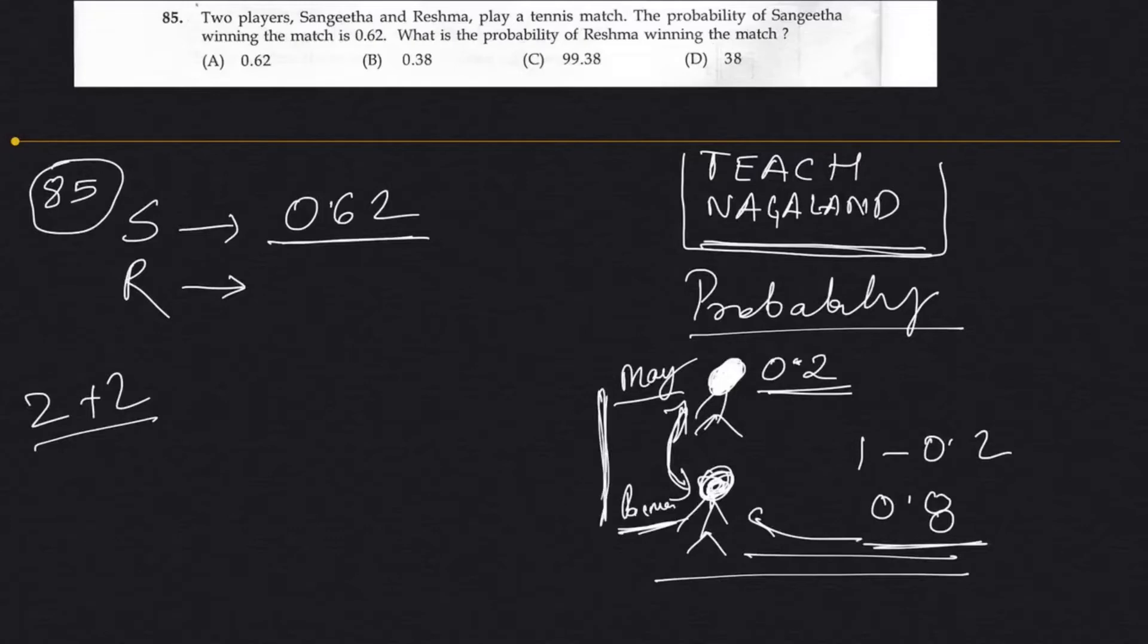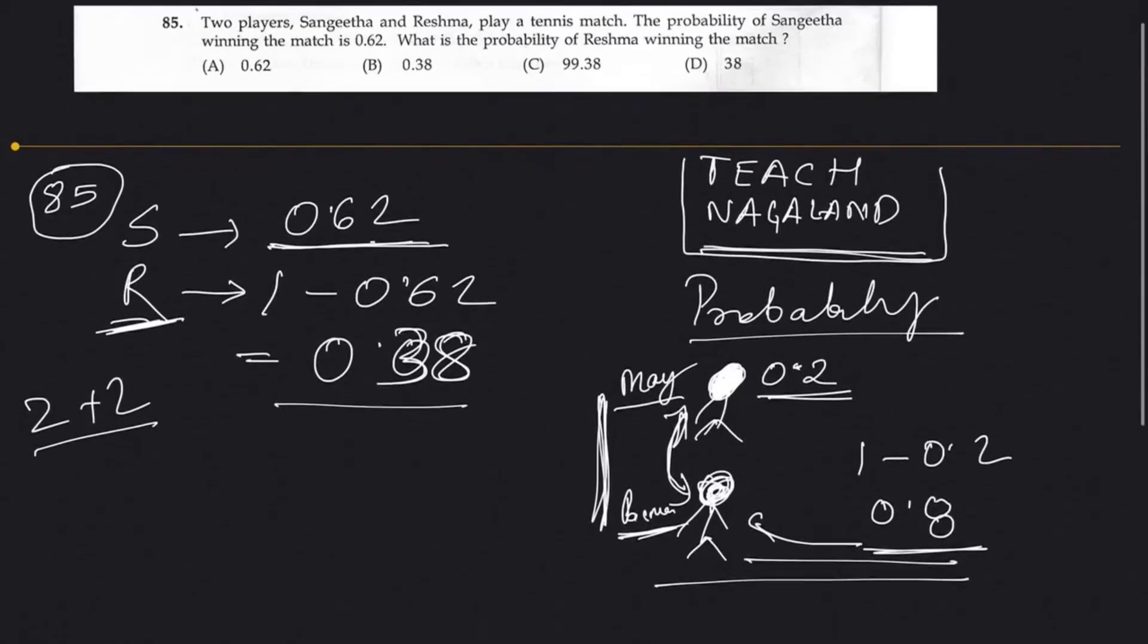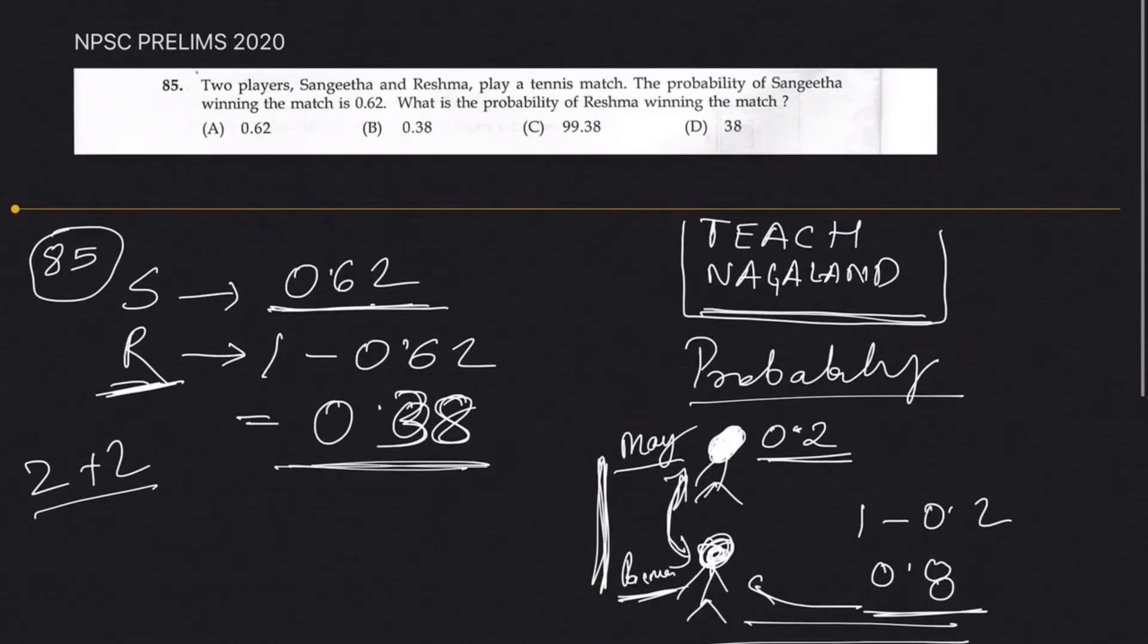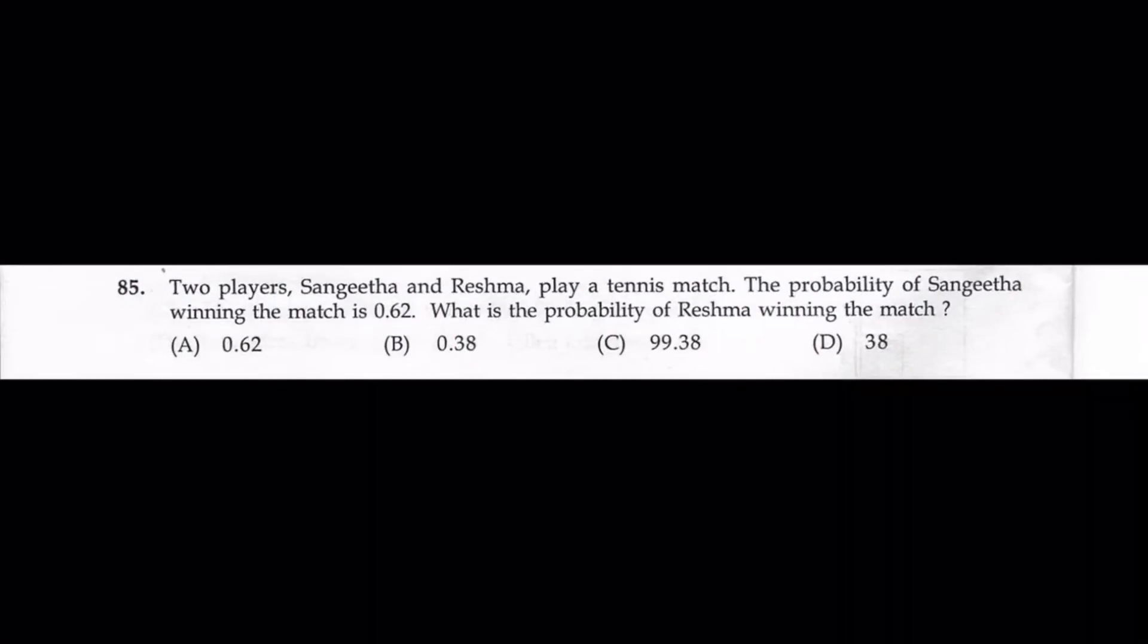So here, the probability of Sankita winning the match is 0.62. What is the probability of Reshma winning the match, which is 1 minus 0.62, which is simply nothing but 0.38. So the answer is 0.38, that is option B. So this is done, we can go to the next question.